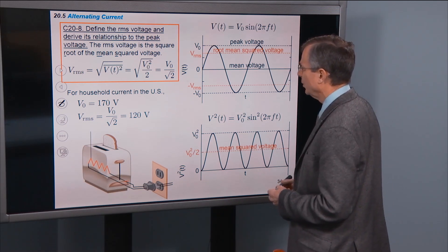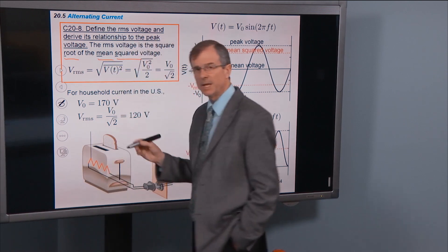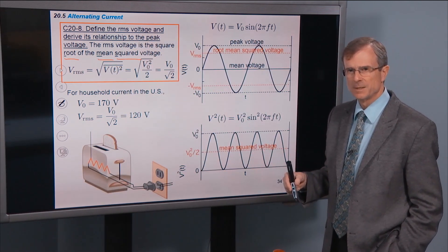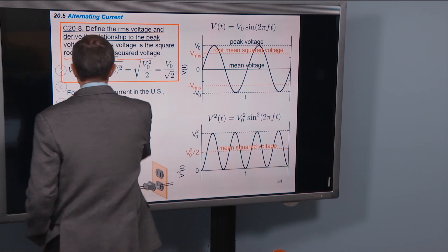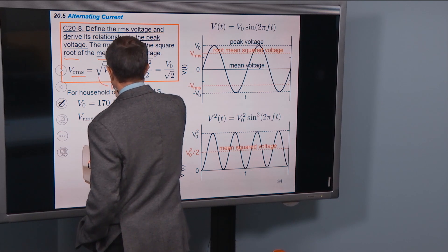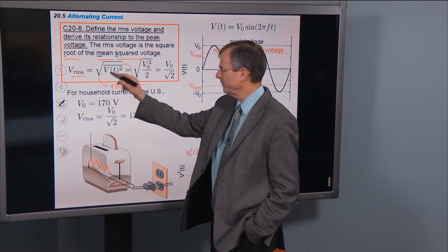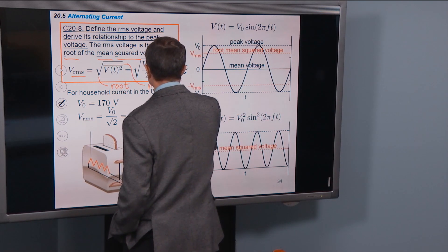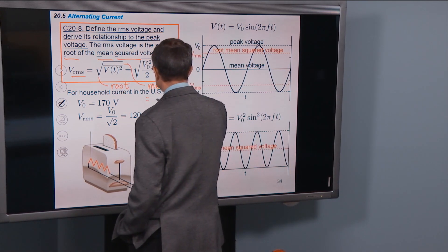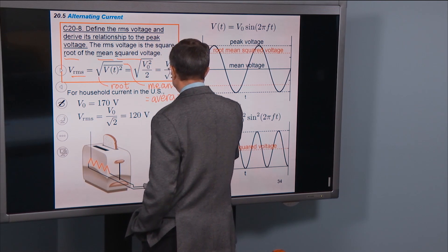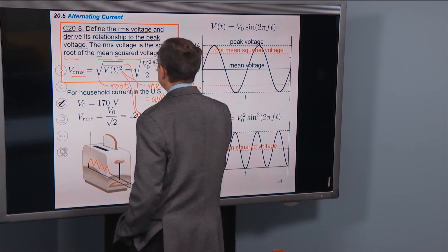Now let's define the RMS voltage. RMS means root, mean, square — the first letters of those three words. The RMS voltage is defined as the square root of the mean of V(t) squared. The horizontal bar above V(t)² denotes the mean, which means average. Then we take the square root of that.